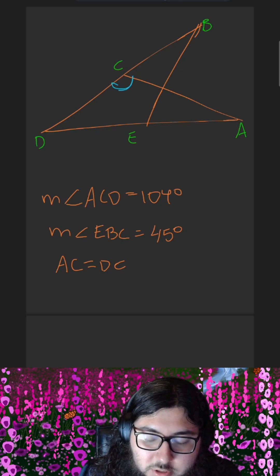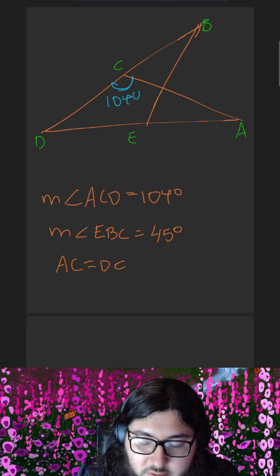First, we know that the measure of angle ACD is 104 degrees, and that the measure of angle EBC is 45 degrees.